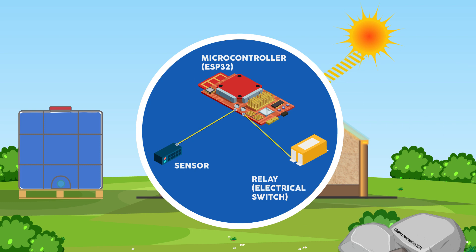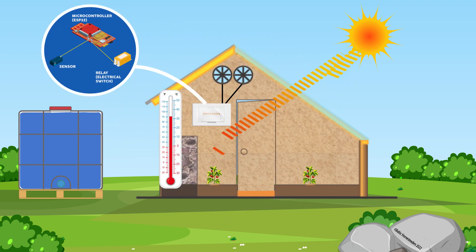By using sensors, a microcontroller and relays, we can control the greenhouse environment in a more precise and efficient way.